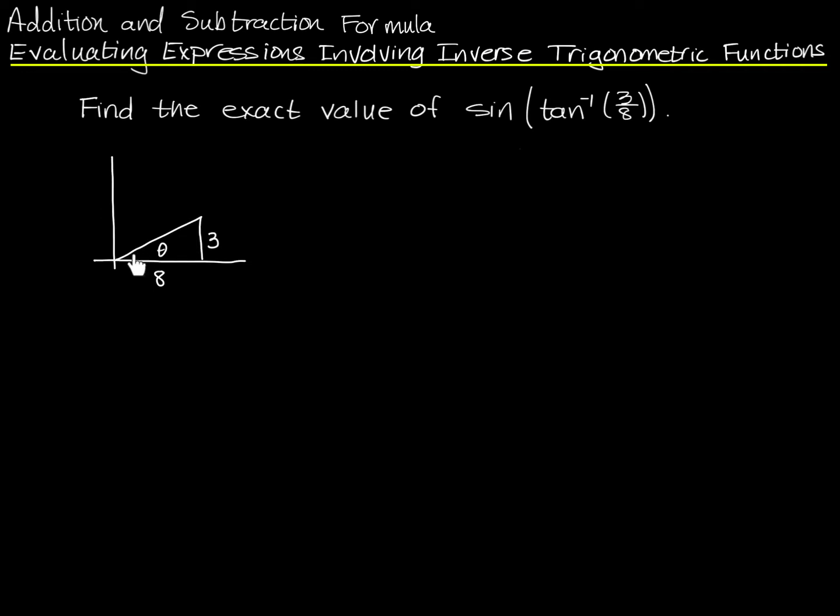From the perspective of this angle right here, opposite is 3, adjacent is 8. So the tangent of this angle is 3 over 8. And remember that that's what tangent inverse means. The angle whose tangent is 3 over 8. Well, that's this angle here, and I don't care how big it actually is. I don't need the numerical measurement of this angle to find the sine of this angle.